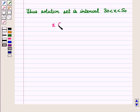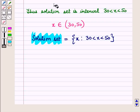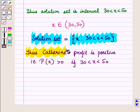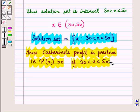Thus the solution set is x ∈ (30, 50), or we can say all x such that 30 < x < 50. Catherine's profit is positive, that is P(x) > 0, if 30 < x < 50, meaning x lies between 30 and 50.